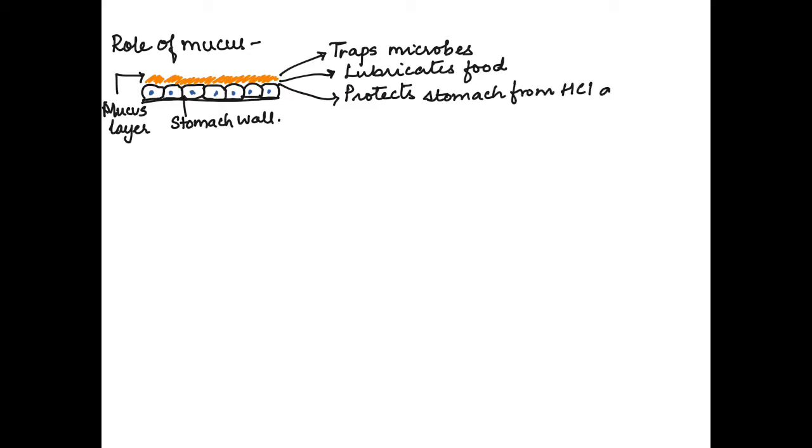Now let us see the role of mucus here. So here this is the layer of mucus and the stomach. In a normal case we can see that there is a layer of mucus present on the stomach wall which protects it. What it does is it traps the microbes so it does not let them be affected and then removed off. It helps in lubrication of the food and it also protects the stomach from HCl and pepsin. Now pepsin is a protein digesting enzyme, so it can lead to self-digestion.